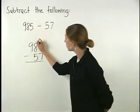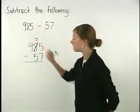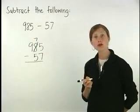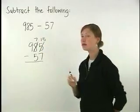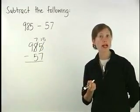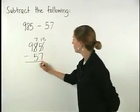We can do this by borrowing one 10 from the tens column which leaves us with 7 tens. The borrowed 10 is then added to the 5 ones to get 15 ones. Now, subtracting in the units column, we have 15 minus 7 which is 8.